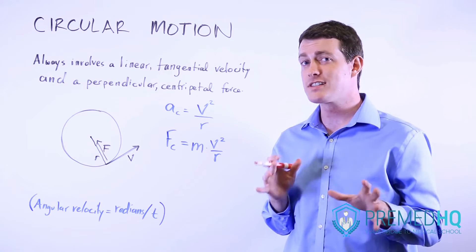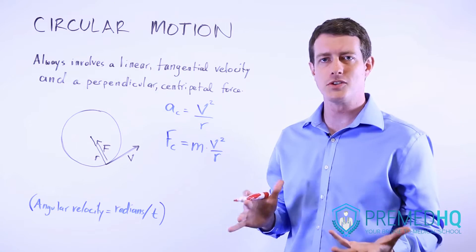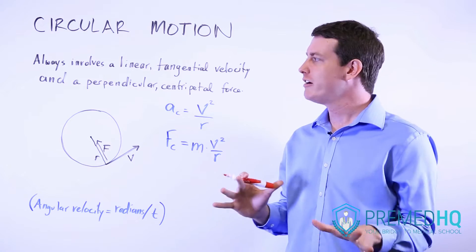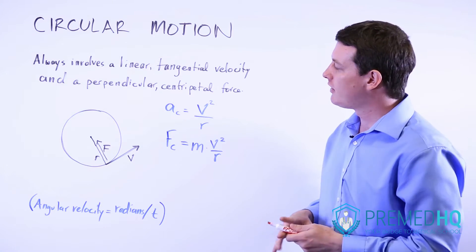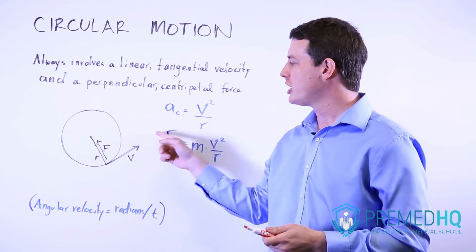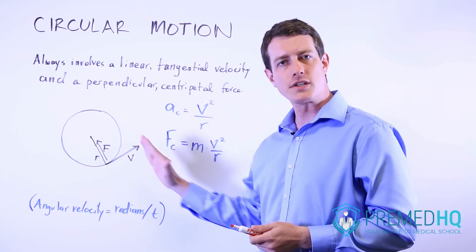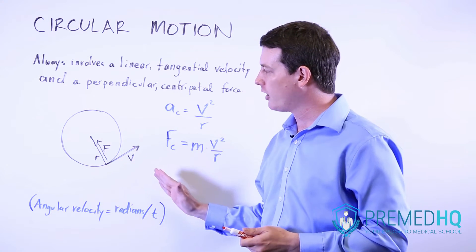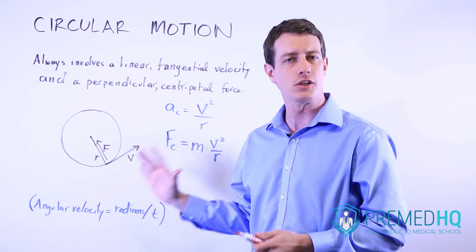Circular motion, or as you'll often see it on the MCAT, uniform circular motion, is a fairly straightforward concept. It involves a linear or tangential velocity and a centripetal force that is perpendicular to that and always pulls toward the center of a circle.